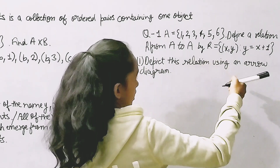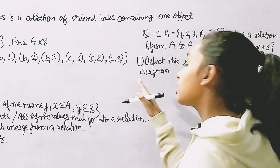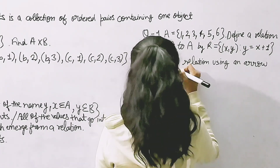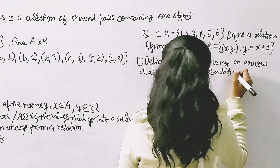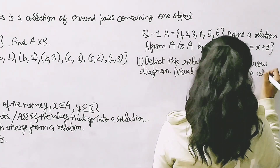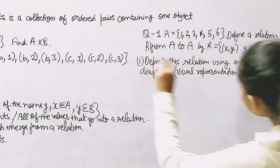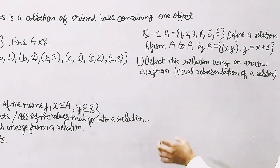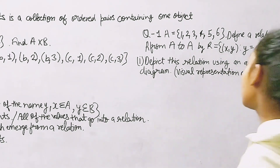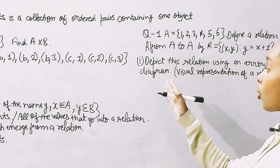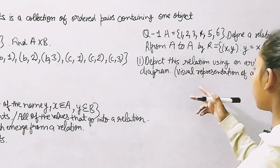An arrow diagram is a visual representation of a relation. It's like a Venn diagram — we use arrow diagrams for representing a relation, visually showing the connection between elements.